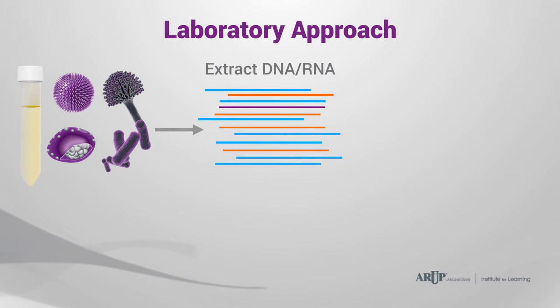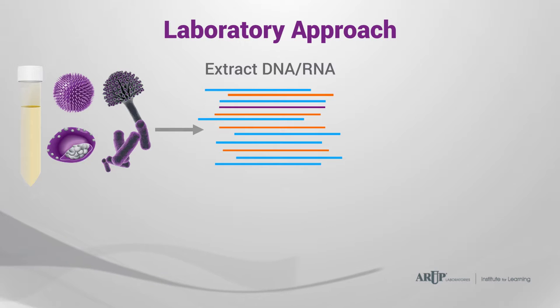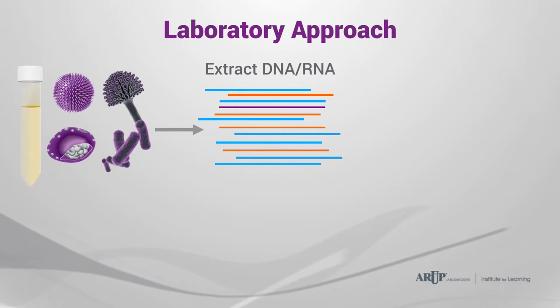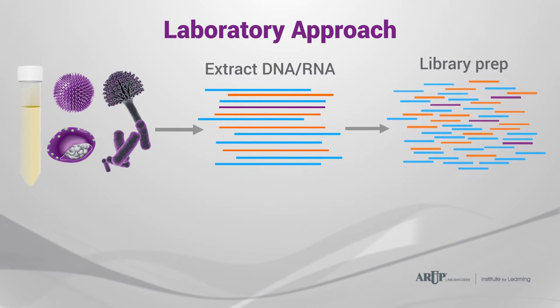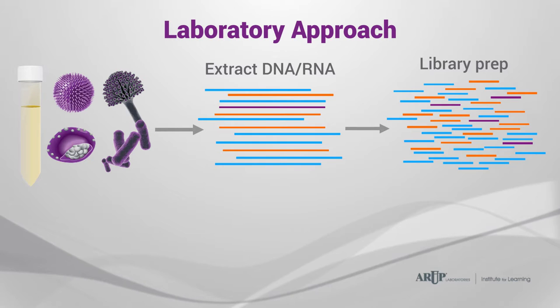The laboratory workflow starts with extraction of total DNA and/or RNA, which will be a mix of human, bacterial, and viral nucleic acids. Sequencing libraries are prepared by converting the longer DNA and RNA strands into shorter segments and adding sequencing adapters to the ends of fragments. The goal of this step is to be as sequence-independent as possible, so as not to alter the overall nucleic acid composition.